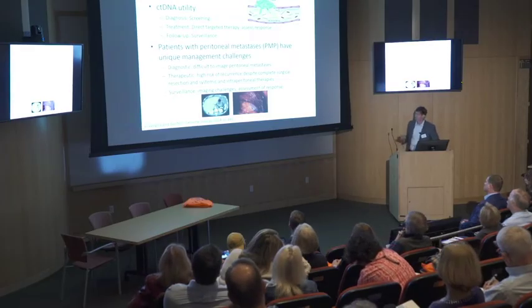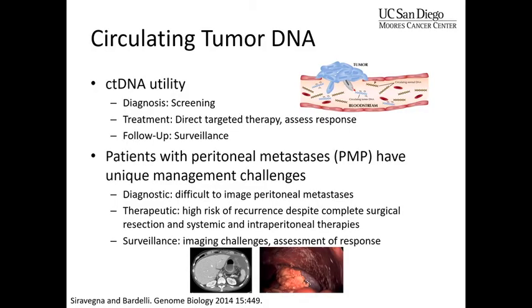There are therapeutic challenges as well — a fairly high risk of recurrence despite our best efforts, even with chemotherapy, HIPEC, or intraperitoneal therapies. And surveillance is also a challenge: once a patient is rendered free of disease, we have to follow them, relying on scans that are — as I mentioned — faulty. All of these areas could potentially be helped by ctDNA. The surveillance aspect was really what got me interested, because we struggle with how to follow patients after cytoreduction and HIPEC.